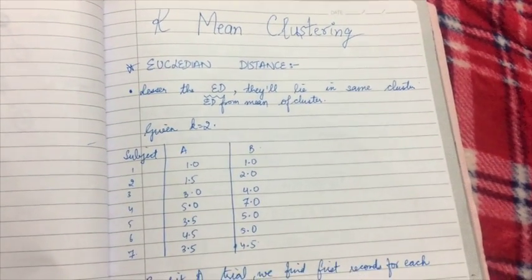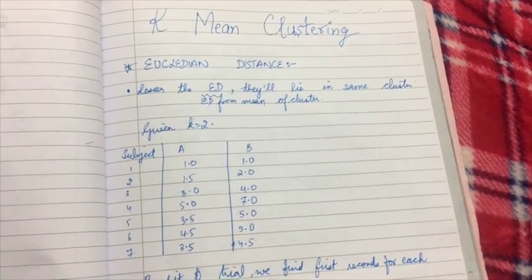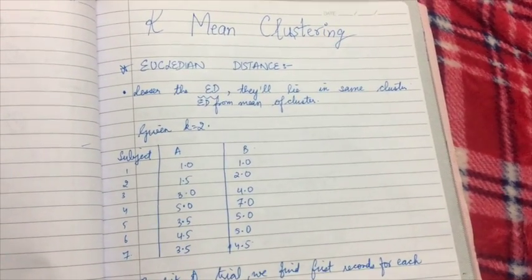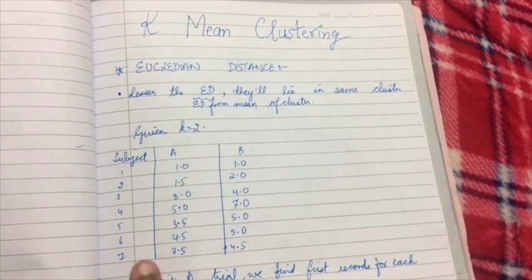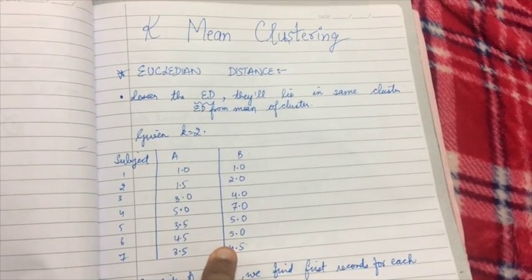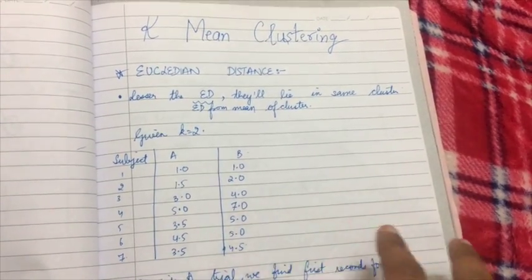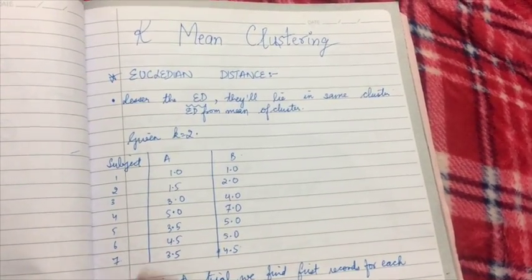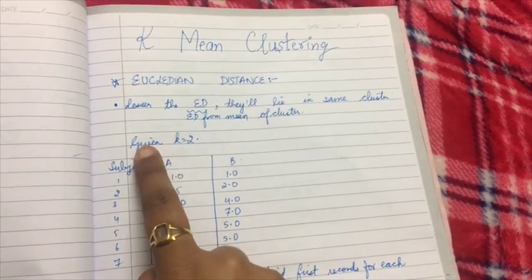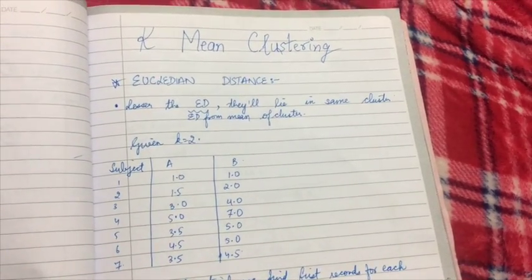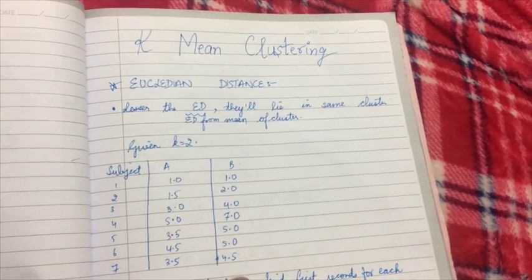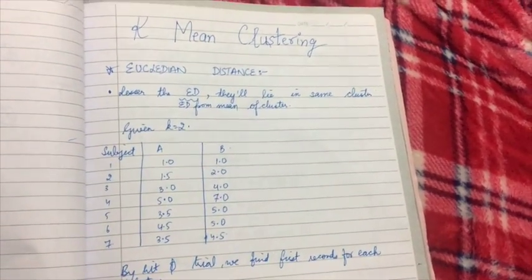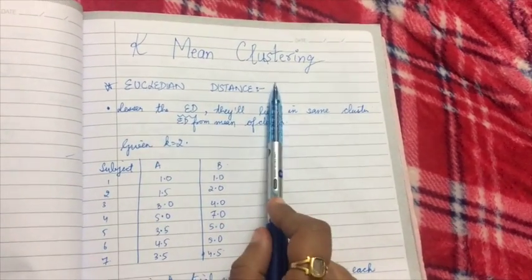In this video we will discuss K-means clustering. Given a set of information, we have to make clusters — that is, groups. How many clusters to make (two, three, four) will be given to us. Here k is equal to two, meaning we have to divide these seven objects into two groups. For this we have to find the Euclidean distance.